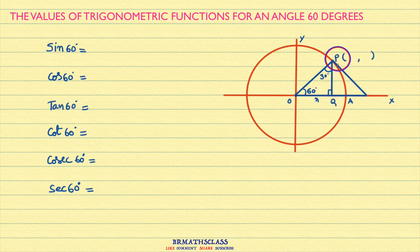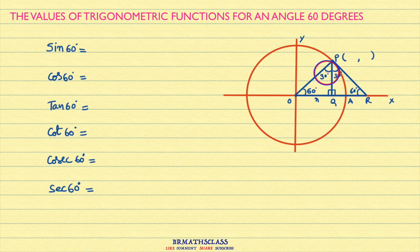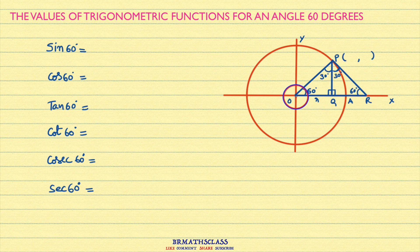Observe triangle PQR. Triangle PQR is congruent to triangle OPQ. I considered triangle PQR — as it is congruent, this angle will be 30 degrees, this angle is 90 degrees, and this will be 60 degrees. If you observe this triangle, this angle is 60 degrees, this angle is 60 degrees, and this angle is 60 degrees. So triangle OPR is an equilateral triangle because all angles are equal to 60 degrees.